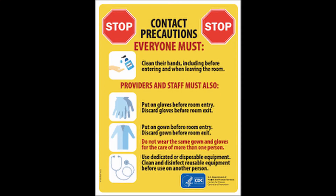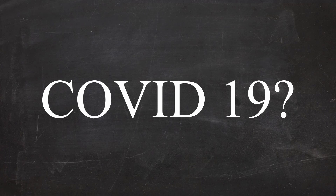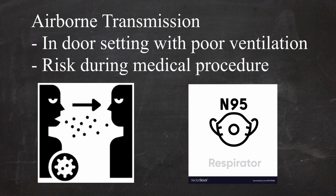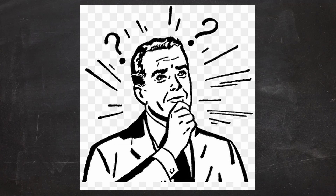Thus, be careful with infected droplets contacting surfaces of the eye, nose, or mouth. This emphasizes the importance of hand hygiene, mask, and potentially face shield too. Then what about airborne? SARS and MERS were airborne transmitted, but what about COVID-19? The study showed that there's not enough presence of SARS-CoV-2 RNA in air samples, and even though it was detected, it was extremely low numbers in large volumes of air, which can be considered an inability to identify viable virus. However, the possibility of airborne transmission in an indoor setting with poor ventilation is still there and requires caution. For instance, SARS-CoV-2 airborne transmission can occur during medical procedures. The answer regarding this remains in doubt and seems to require more research.